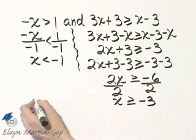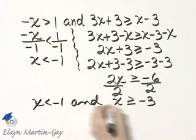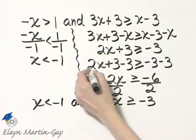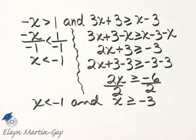So I have x less than negative 1 and x greater than or equal to negative 3. Write these two inequalities down because we're about to go to a few number lines.